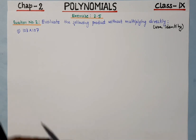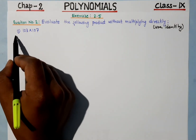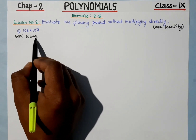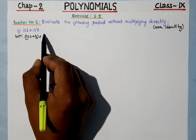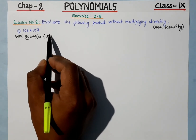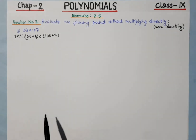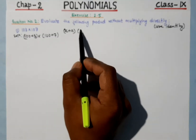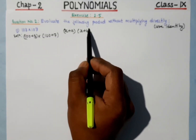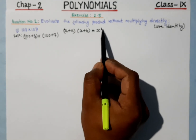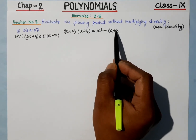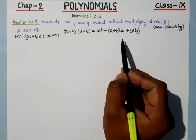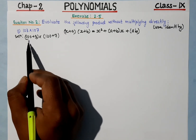For the first question, 103 into 107, we need to rewrite this using the identity: (x + a)(x + b) = x² + (a + b)x + ab.